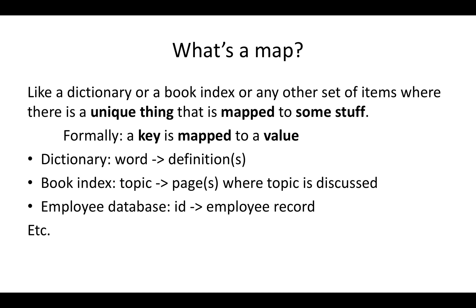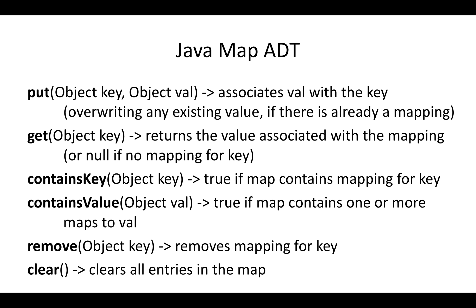There are lots of sets of items where, given one piece of it, you want all the other information related to it. This is a mapping. Formally in data structures, a key — which is the item that you have — maps to the value, which is the stuff that you want. For a dictionary, the word is the key and the definition is the value. For a book index, the topic is the key and the pages where it's discussed are the values. You might have an employee database where the employee's ID is the key, and we want to get back the employee record. The main idea with a map is that we really want fast access to the stuff associated with that key.